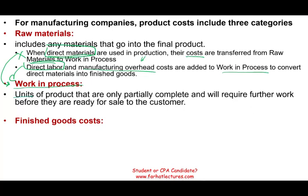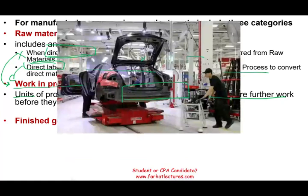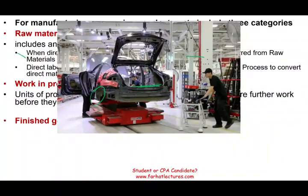Work in process units are partially completed — not 100% complete. They require further work before they are ready to be sold to the customer. For example, no one will buy a Tesla that is not complete: no tires, no batteries, no lights, no windows. So this is work in process, meaning it's not a fully finished vehicle.